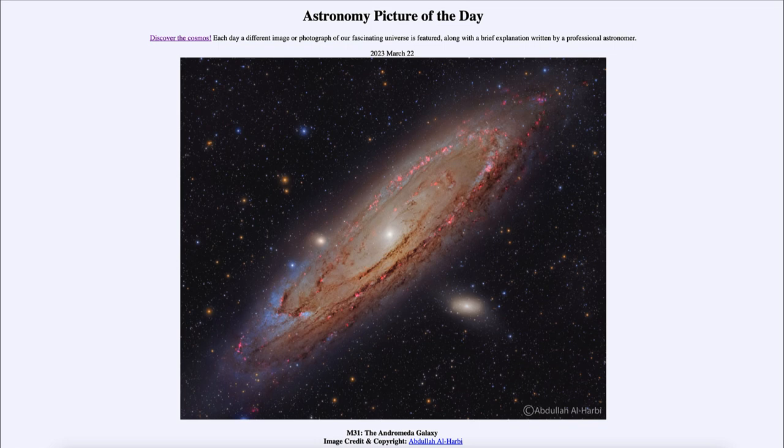So what do we see here? As it says in the title, this is M31, the most distant object that you can easily see with the naked eye. That is the Andromeda Galaxy, about two to two and a half million light years away.